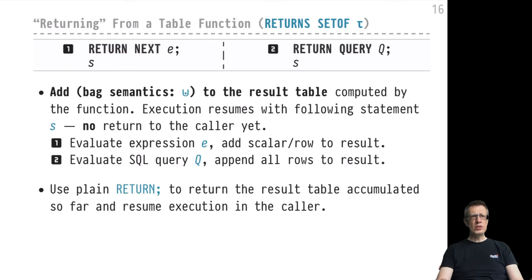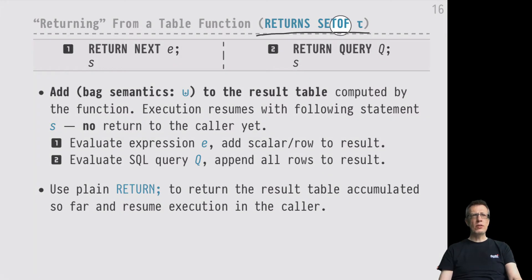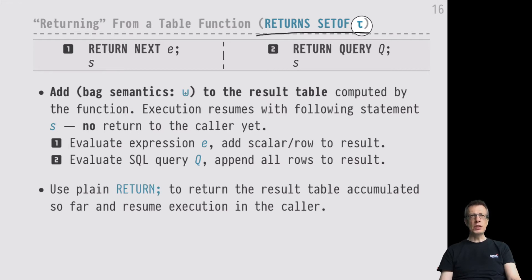There is also the possibility to define table functions — set-returning functions — with PL/SQL, and that's really interesting. You can tell these apart from the first type by looking at the RETURNS clause: you will see the modifier SET OF. This indicates the function will indeed return a set — actually a bag — of values of type tau. If tau is a row type, you return a bag of rows, which is just a table. You could also return a bag of integers or other single cell values.